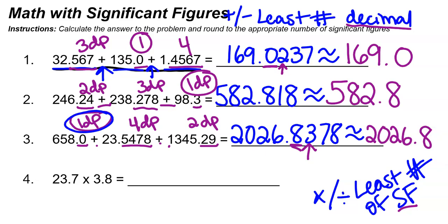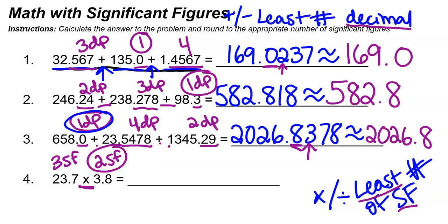Number four — instead of addition or subtraction, we have multiplication. So we are no longer looking at decimal places; this time we are looking at significant figures. We take the value with the least number of significant figures. 23.7 has three significant figures, and 3.8 has two significant figures, so our final answer should also have two significant figures. Multiplying 23.7 times 3.8, I get 90.06.